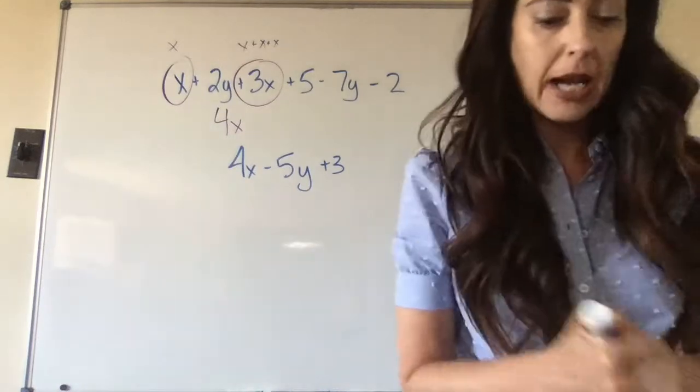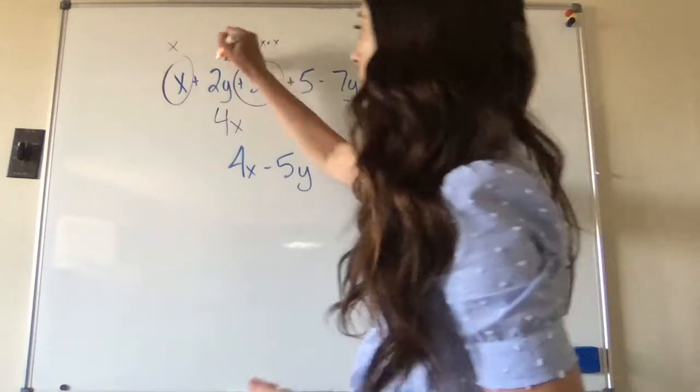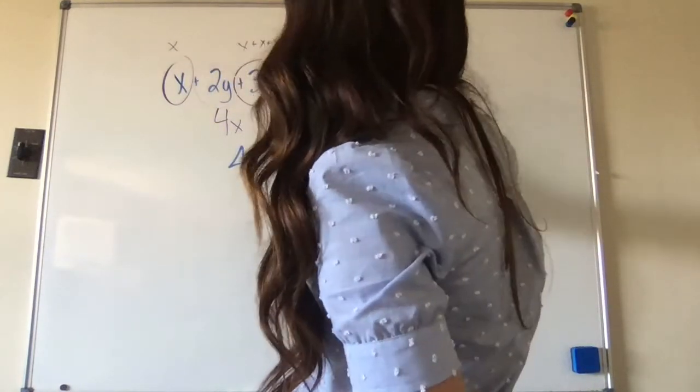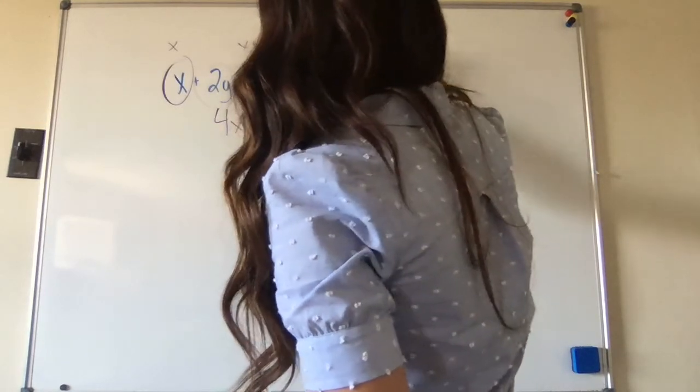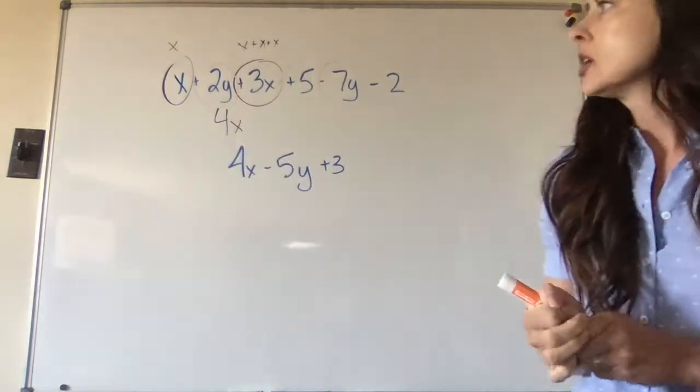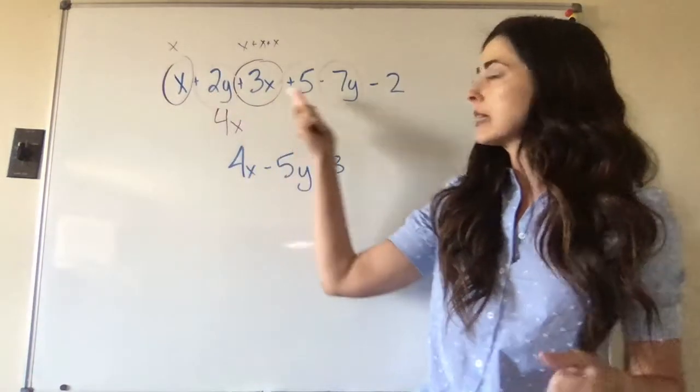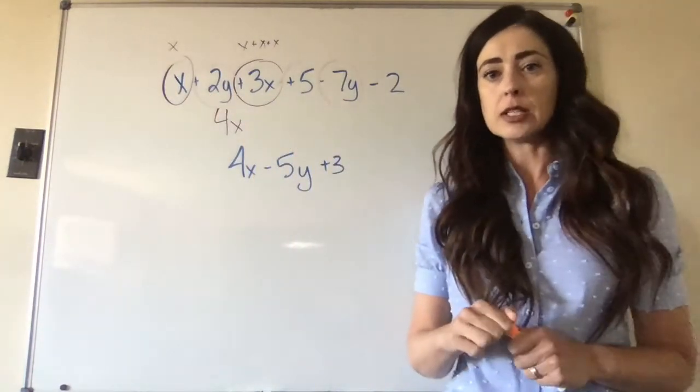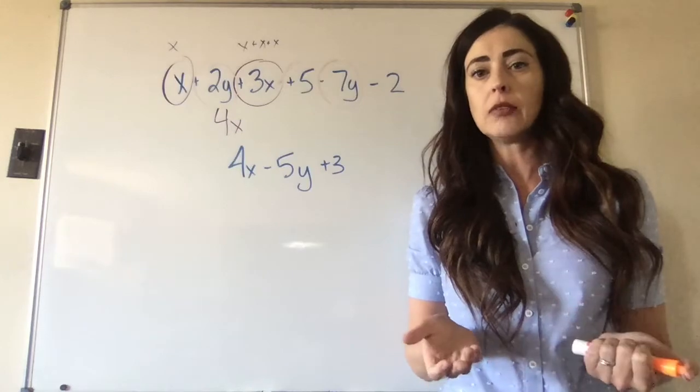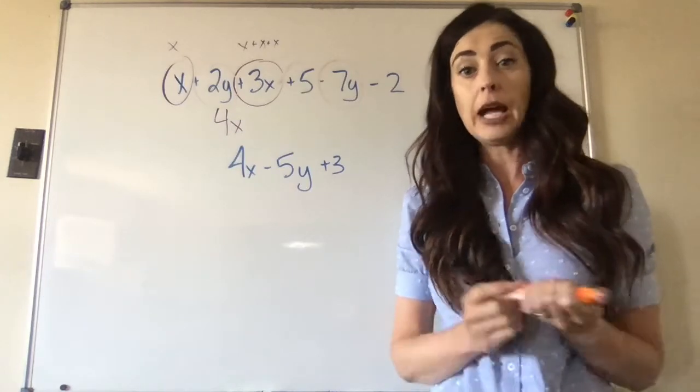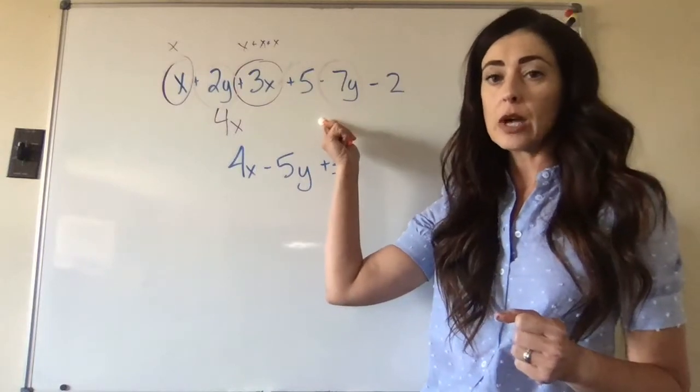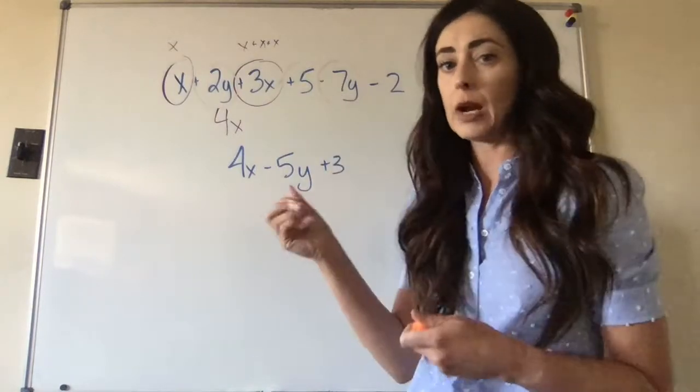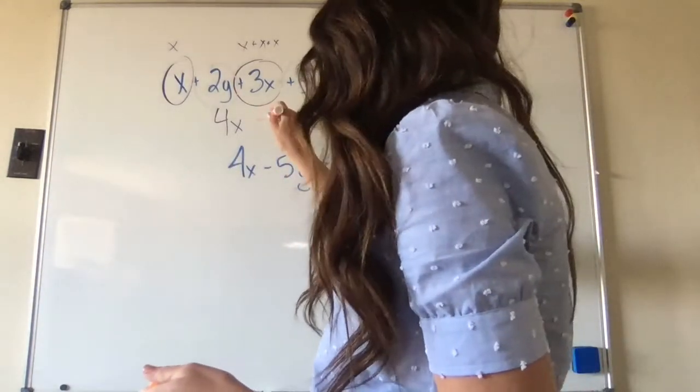And then I'm going to look at my y's. So we have a 2y and we have a negative 7y. So remember, if the signs are different, we find the difference. What's the difference between 2 and 7? It's 5, right? And which one's greater? The 7 is greater, and it's attached to a negative symbol. So we're going to do minus 5y.